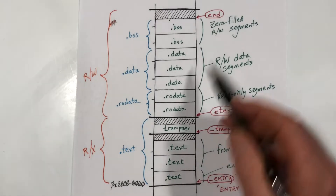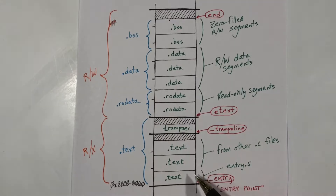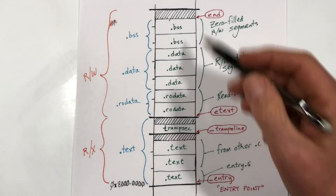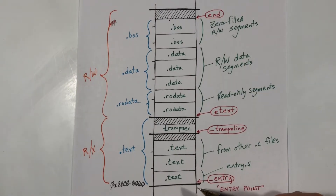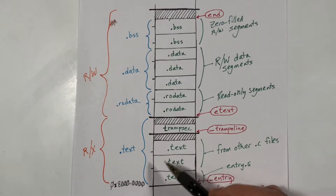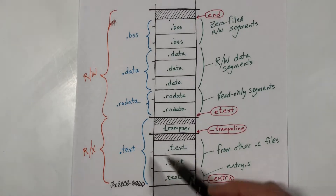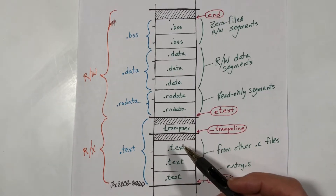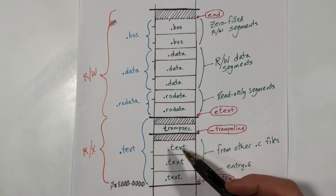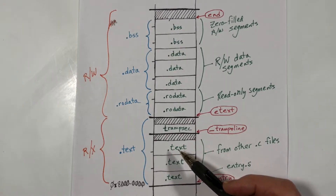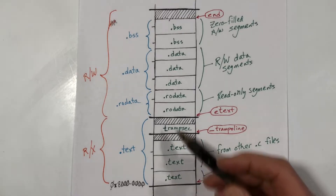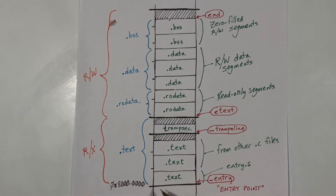Here in green I'm showing what comes from the object files from the various parts of the kernel, and the linker will figure out where in memory to place all of that material. Then it will build the executable file which contains all of the data to be loaded in memory. Later when we get ready to load the kernel and run the kernel, QEMU — the emulator that is being used — will read the executable file and put this stuff in memory at the addresses that the linker has chosen.